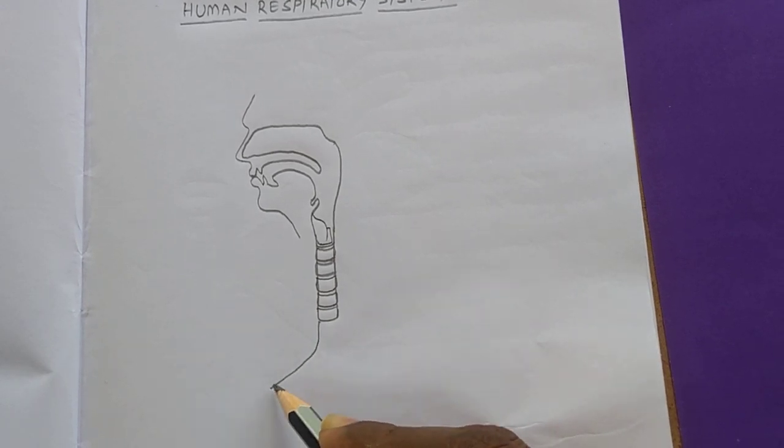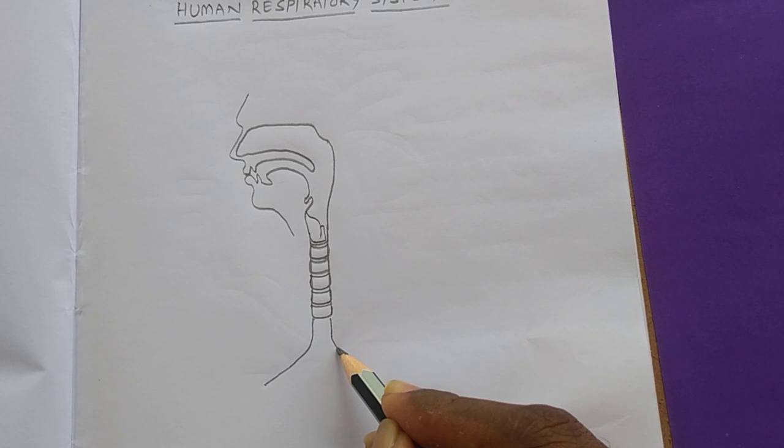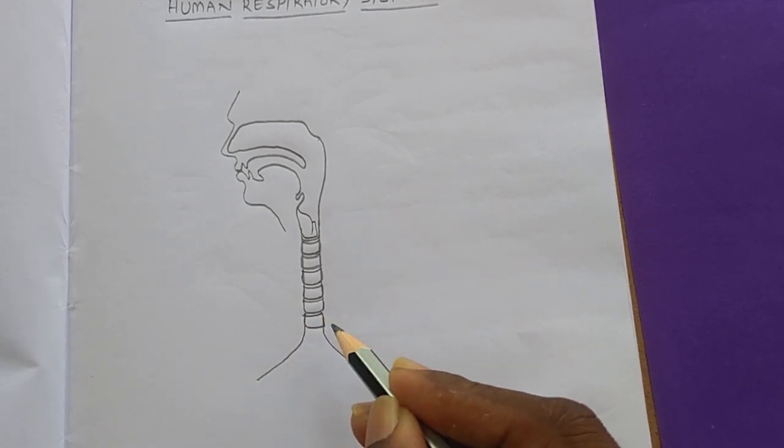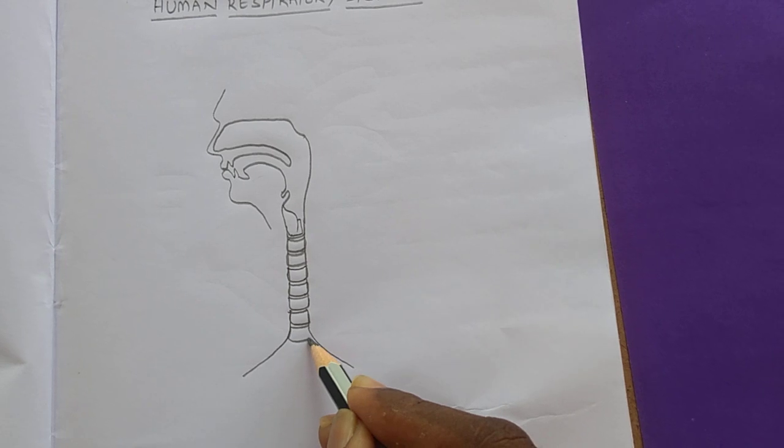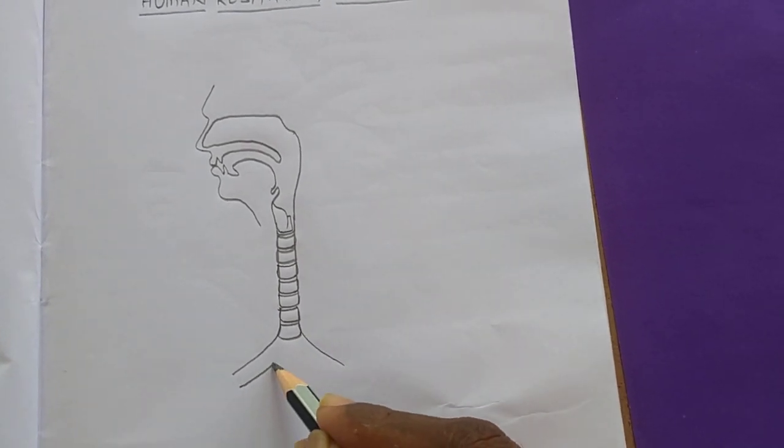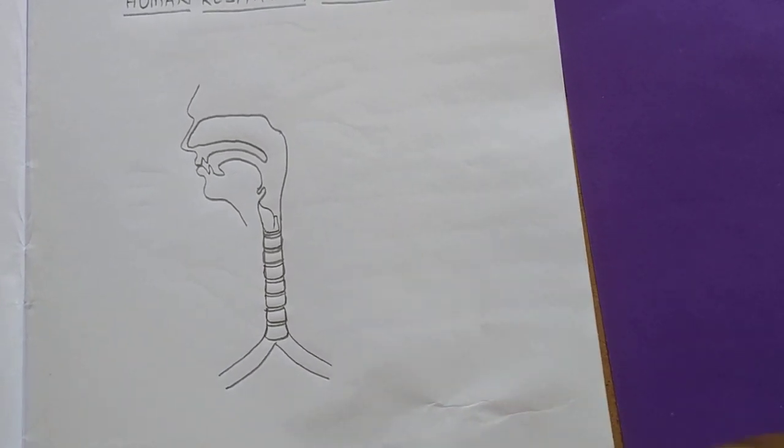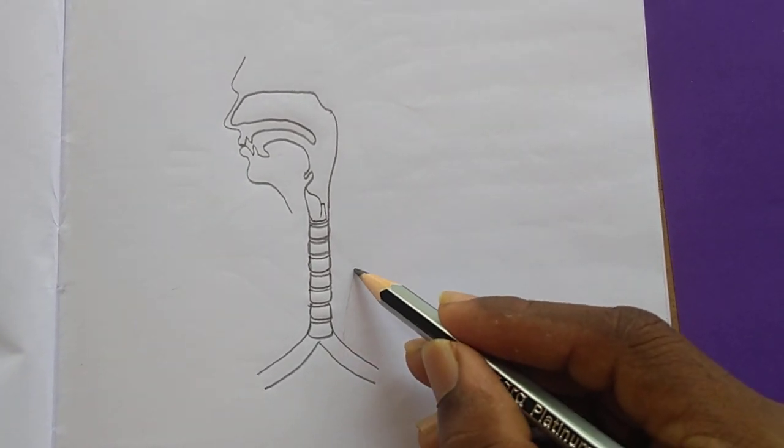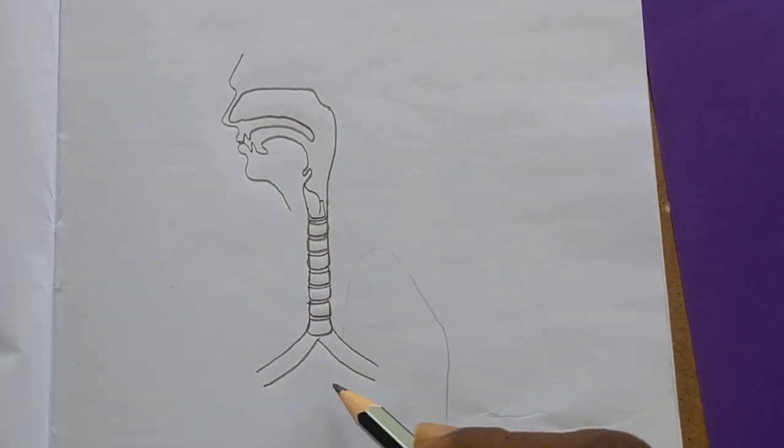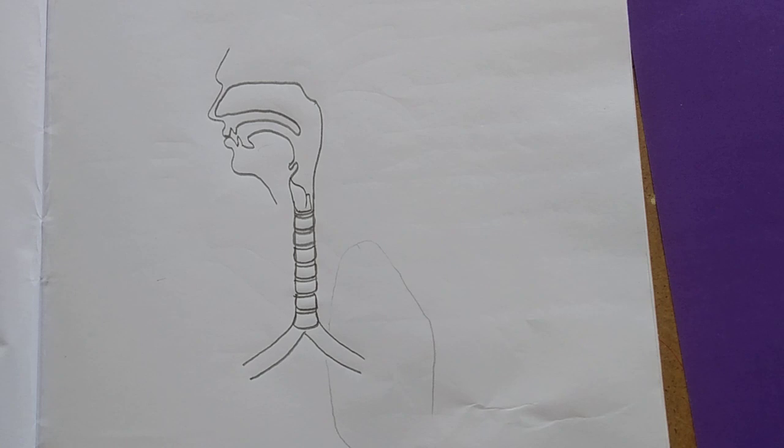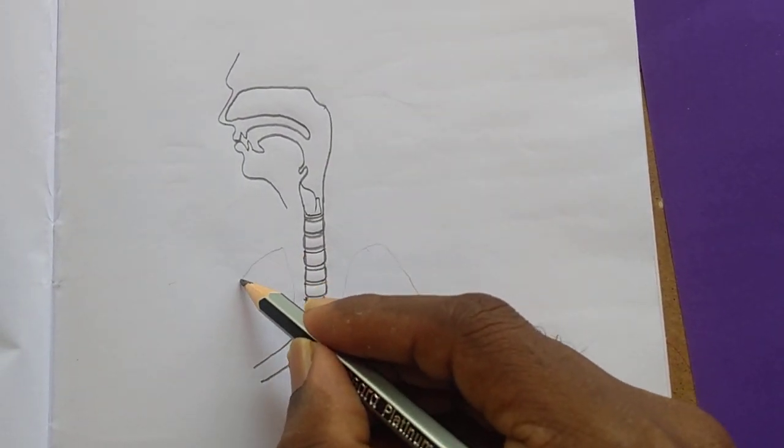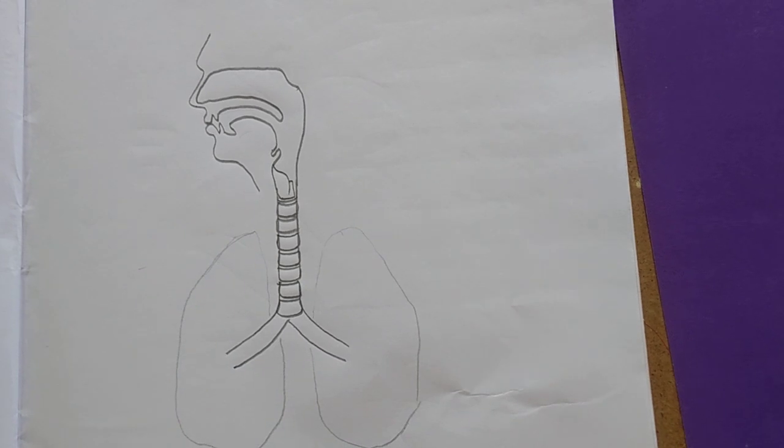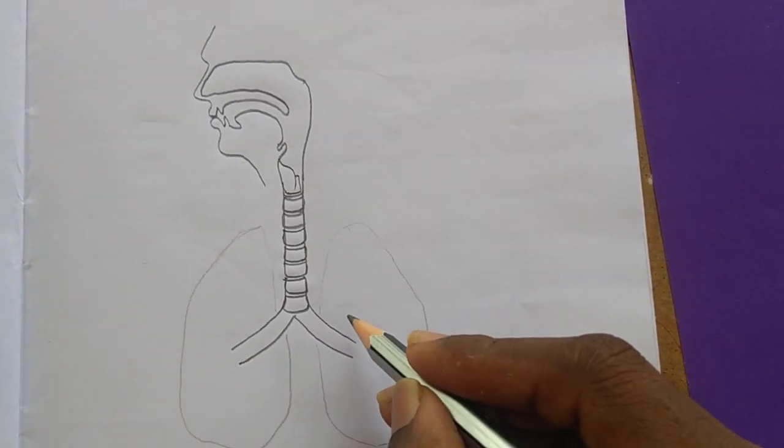...two branches like this. After this, we have to draw the outer lines for the lungs like this. And now from that...